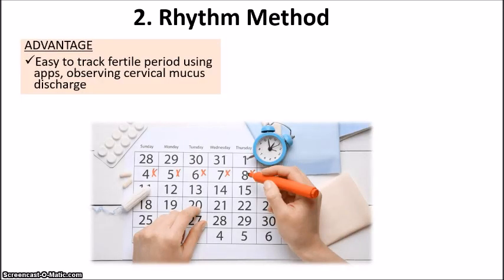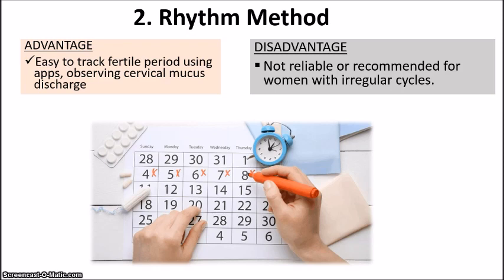The rhythm method is ideal for those with a regular cycle. The advantage is that it's generally easy to track your fertile period using various apps, and you can also observe cervical mucus discharge — during your fertile period the mucus tends to look like raw egg white, very pulley in consistency. The disadvantage is that this method is not reliable and is definitely not ideal for women who have irregular cycles, as it becomes very difficult to track the fertile period.